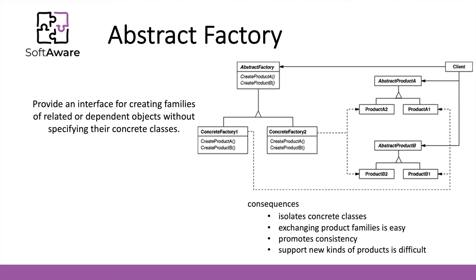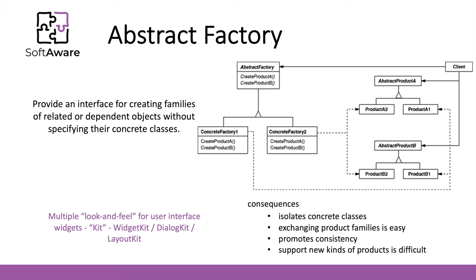The support for new kinds of products is difficult. Extending abstract factories to produce new kinds of products isn't easy. That's because the abstract factory fixes the set of products that can be created. So, supporting new kinds of products requires extending the factory interface, which involves changing the abstract factory class and all of its subclasses.